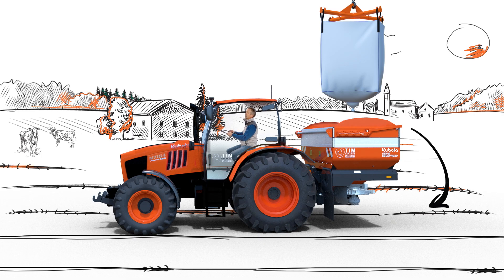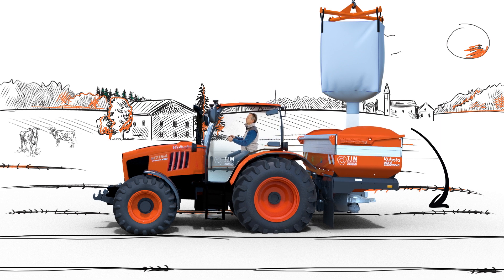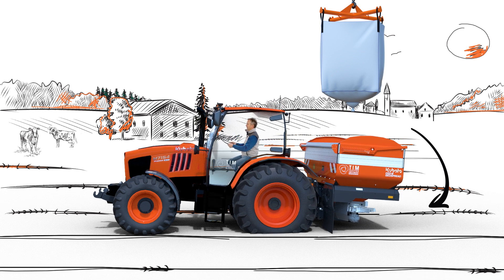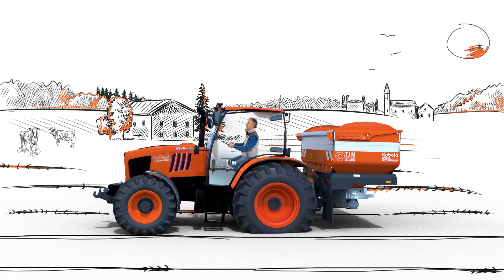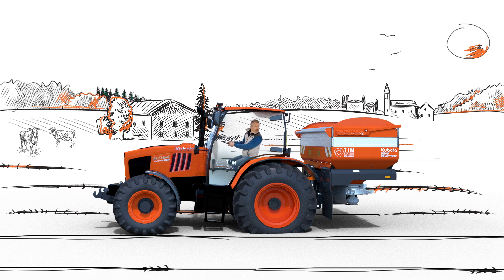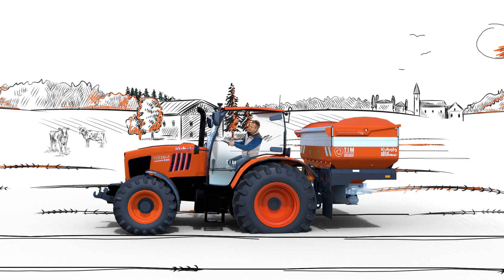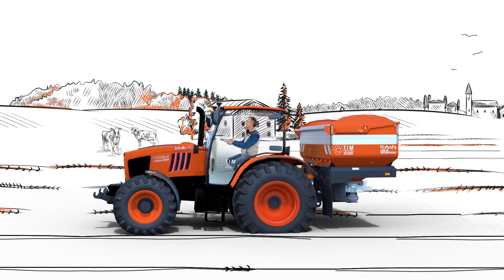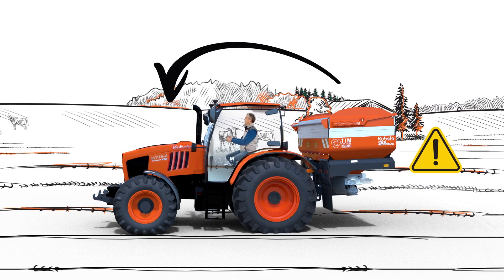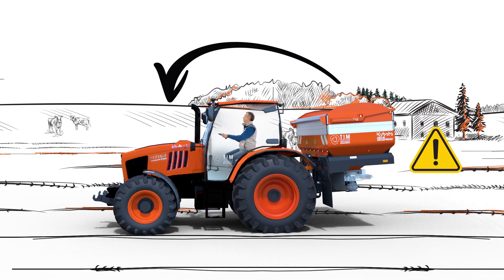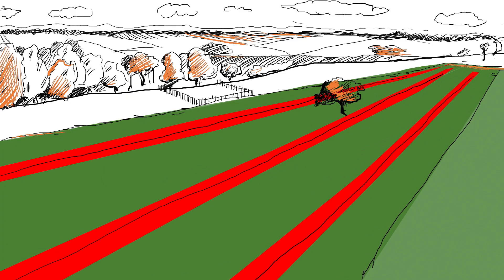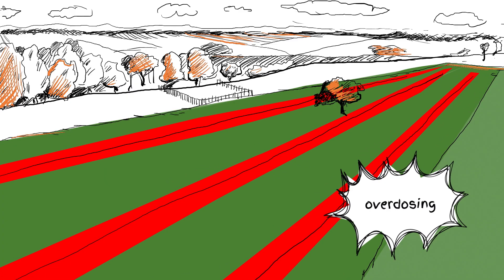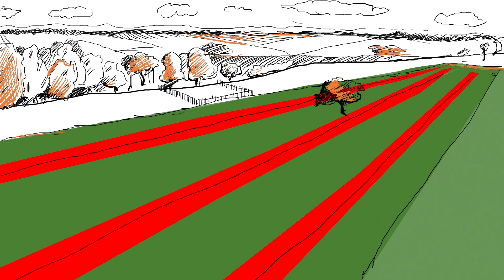If he adjusts the spreader after filling it with fertilizer, it will look good in the beginning, but when the hopper starts to empty after some spreading, the spreader will go up and tilt to the front because of the weight influence on the tractor tires. This will create a wider working width and, as a result, overdosing between two passes.